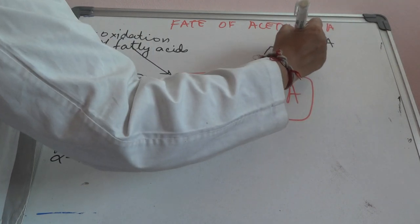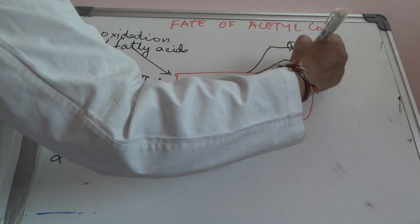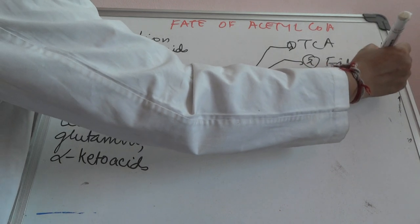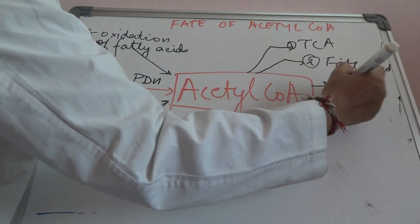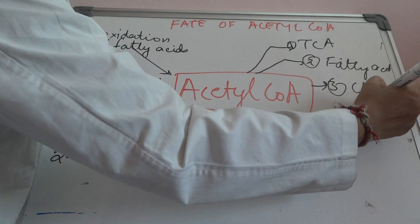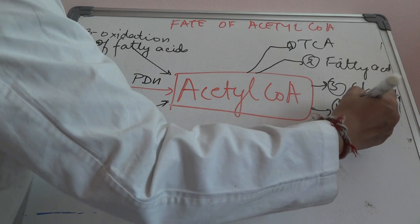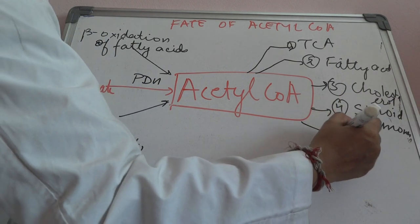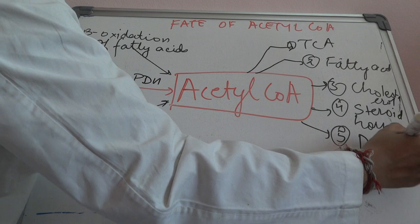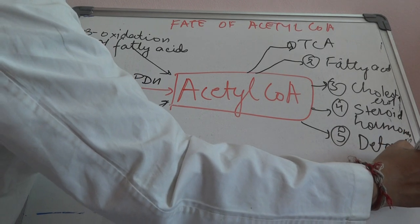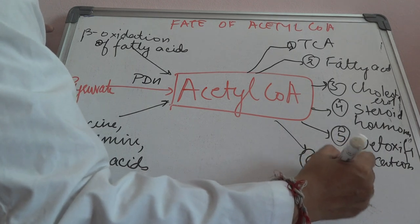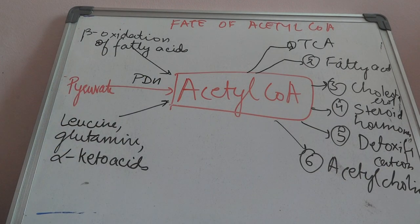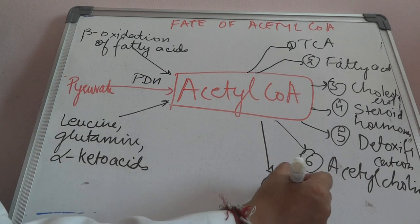Acetyl-CoA can also be formed from beta-oxidation of fatty acids. Regarding what acetyl-CoA can form: first, it enters the tricarboxylic acid cycle; second, it forms fatty acids; third, it forms cholesterol; fourth, it leads to the formation of steroid hormones; fifth, it takes part in detoxification reactions; sixth, it helps in acetylcholine formation; and seventh, it leads to the formation of ketone bodies.